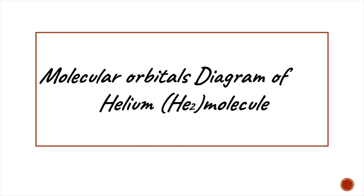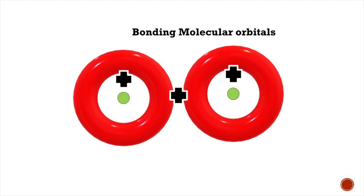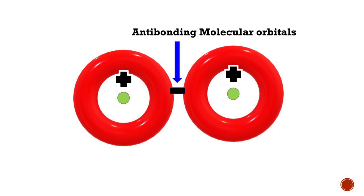Welcome to Aurora Chemistry for Everyone. Molecular orbital theory states that when two atomic orbitals combine, they form two molecular orbitals: namely, bonding molecular orbital and anti-bonding molecular orbital.